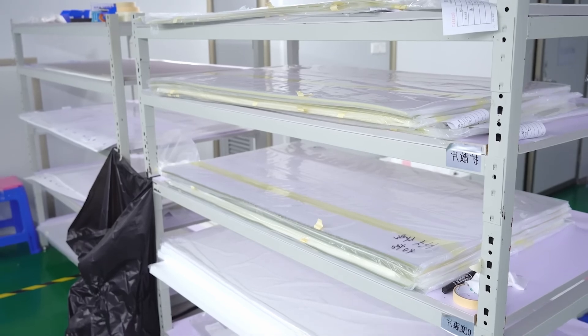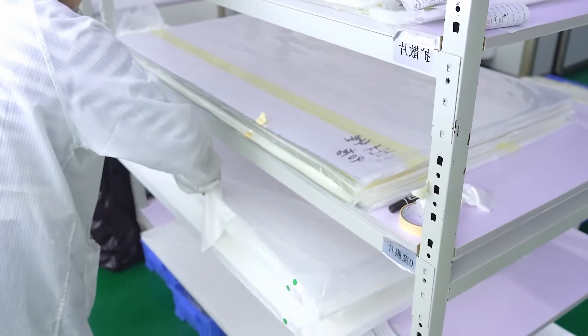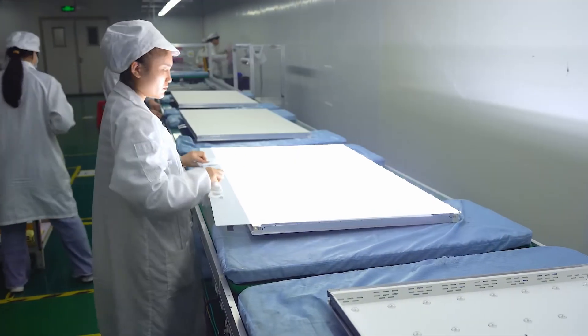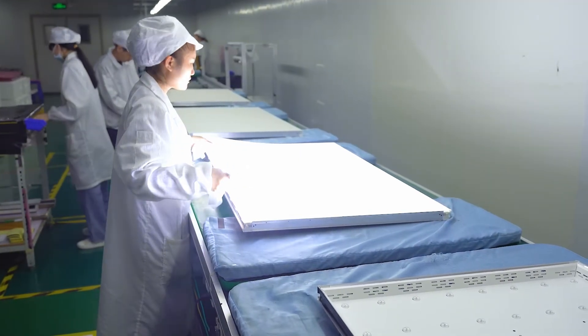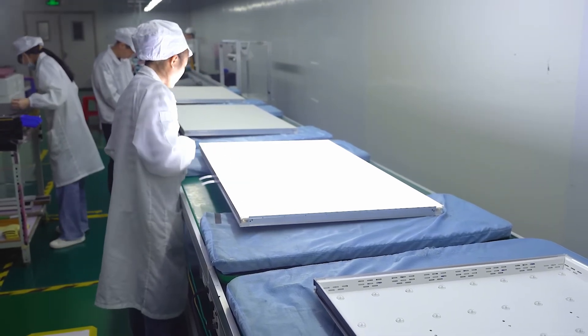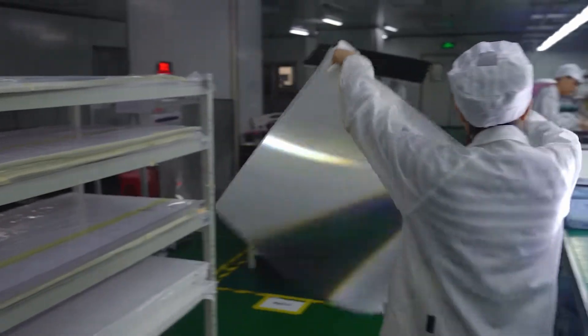At the core of every LCD TV is the liquid crystal display itself, which is composed of several key components. These include liquid crystals, glass substrates, polarizers, color filters, and backlights. Each of these elements plays a critical role in the TV's ability to produce the vibrant images you see on screen.